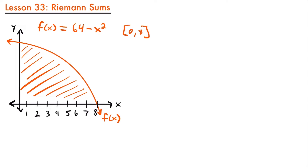How would we find the area under this curve? As we go through calculus, we'll see different ways to calculate that area, but the first way we're going to do this is by using rectangles. Let's try to approximate it by using four rectangles, so n, the number of rectangles, will be equal to 4.